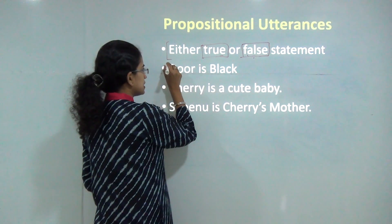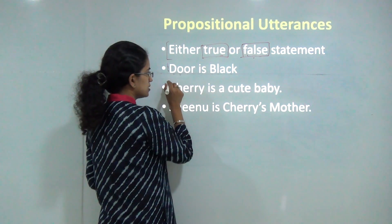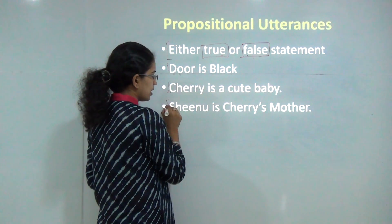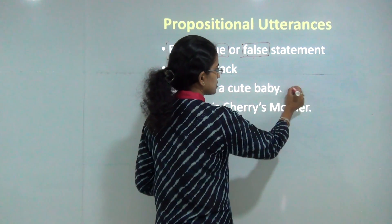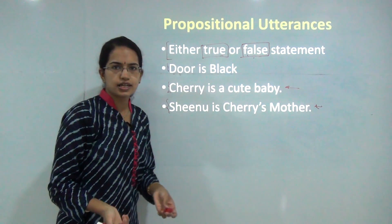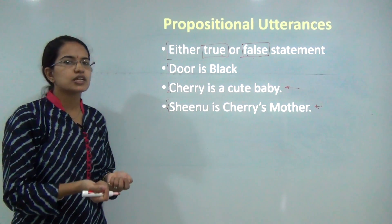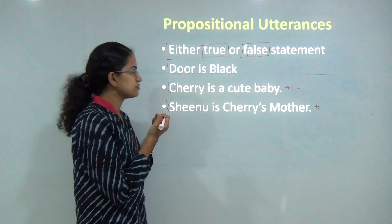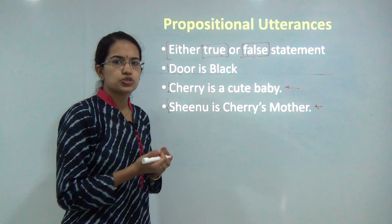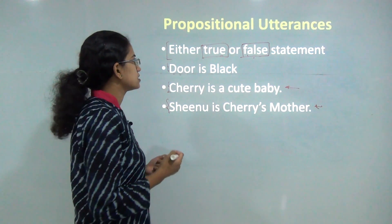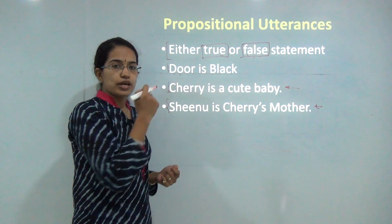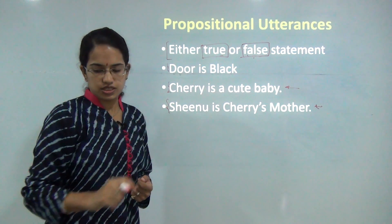So I have statements like 'door is black,' 'cherry is a cute baby,' and 'Shiloh is Cherry's mother.' These statements would either be correct or incorrect — that's the only option these kinds of statements have, and they are usually direct statements. This is what we understand by the word propositional.